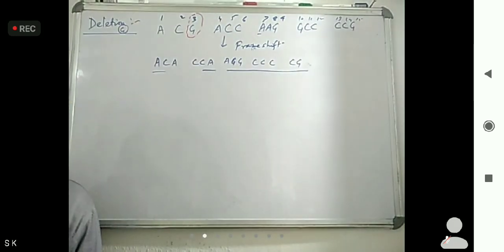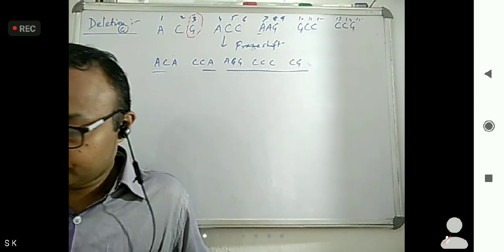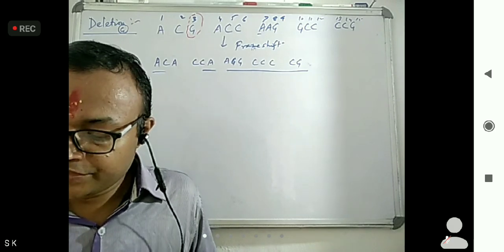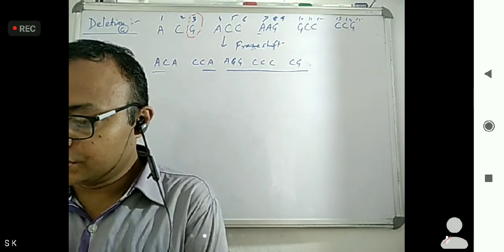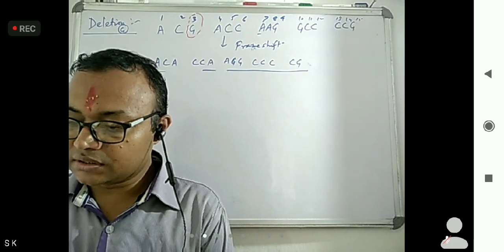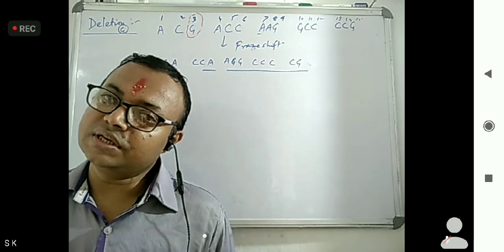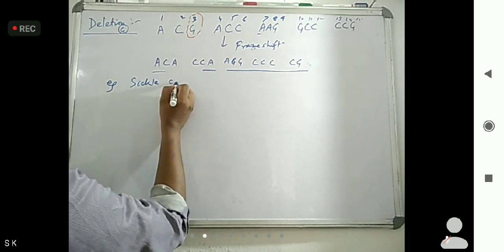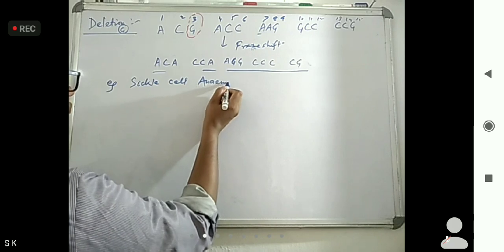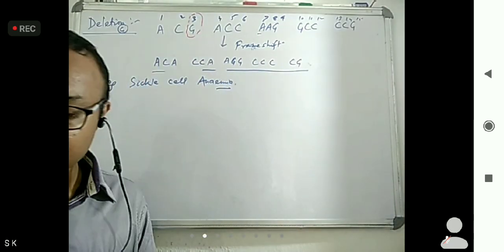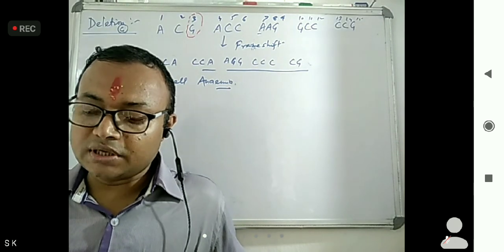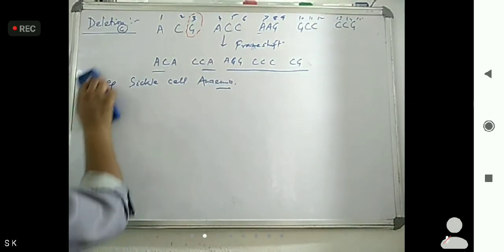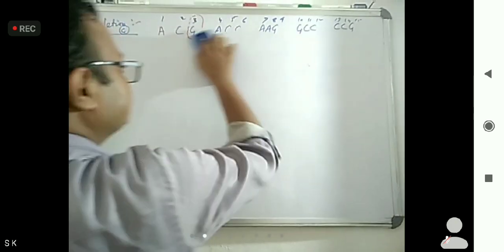Now this frame shift mutation — what happens here is the reading frame has been changed. One example we can see here is sickle cell anemia. We will see that in detail in the genetic disorder section. Now next, one more type is there — that is point mutation.